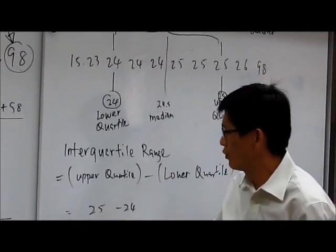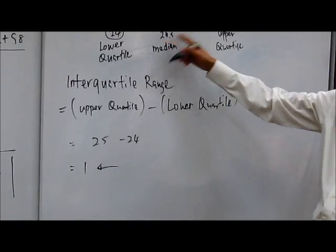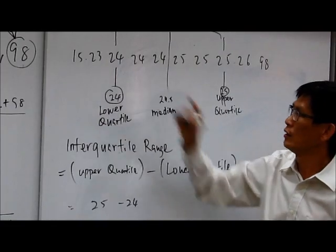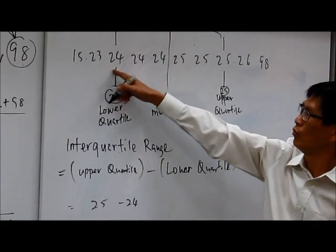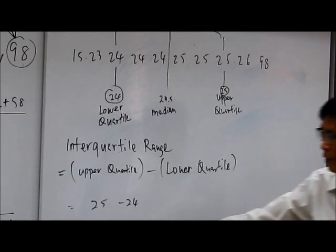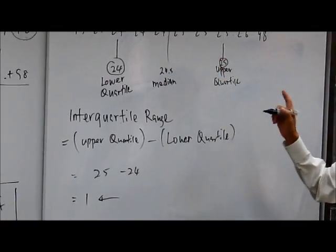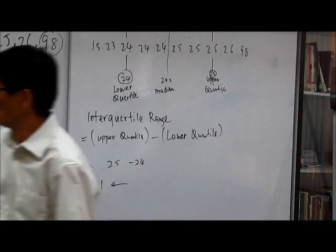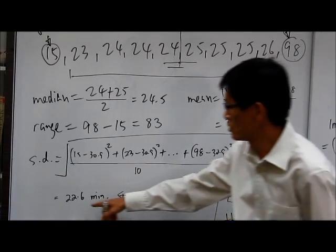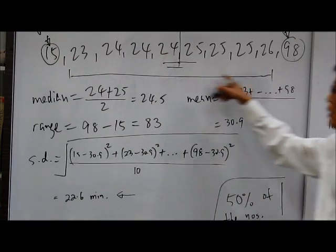If you look at the interquartile range, 1, it makes more sense in this case because the median being 24.5, how far are the numbers away from the median on both ends? It's roughly about 0.5 on each side. So this number 1 makes sense. So it is a better measure of dispersion. How dispersed the time statements are compared to if we have to use standard deviation. In this case, the dispersion is 22.6, which is not a true reflection because there are extreme values in this particular distribution.